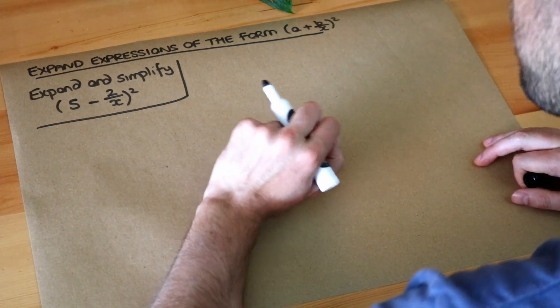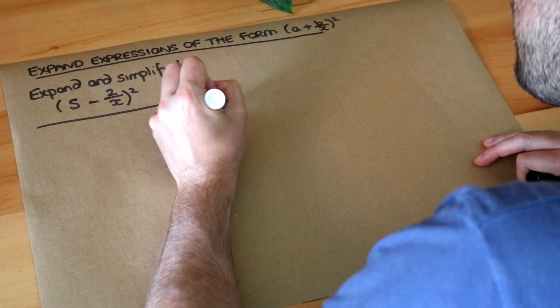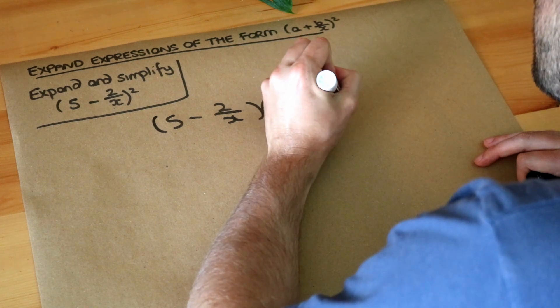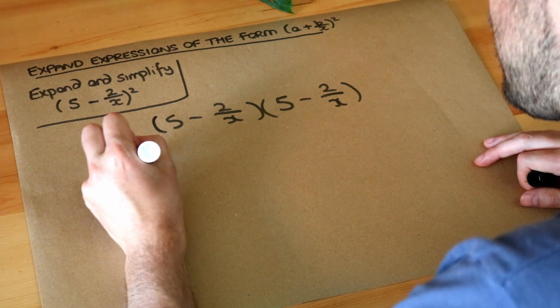Whenever we square a bracket we just write it out twice, so it's 5 minus 2 over x multiplied by 5 minus 2 over x. And as before we just do each thing in the first bracket multiplied by each thing in the second.